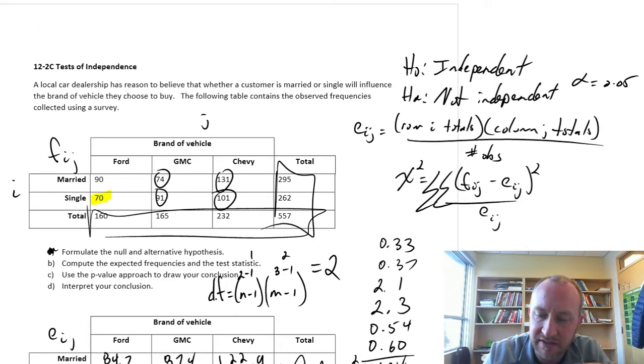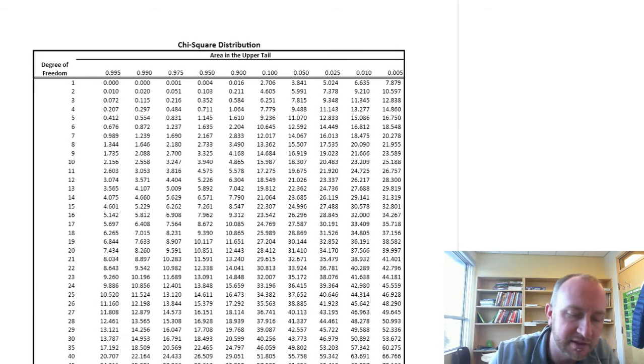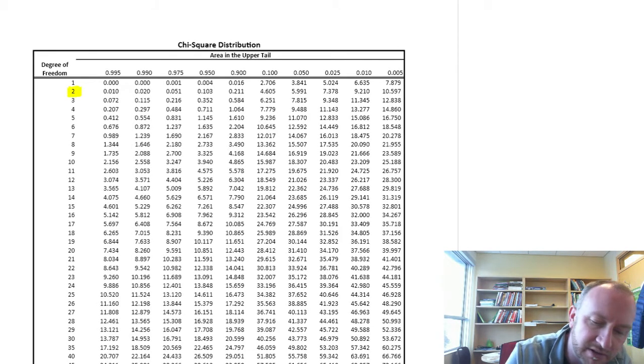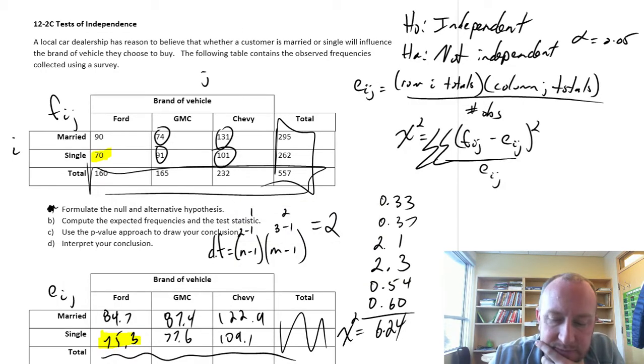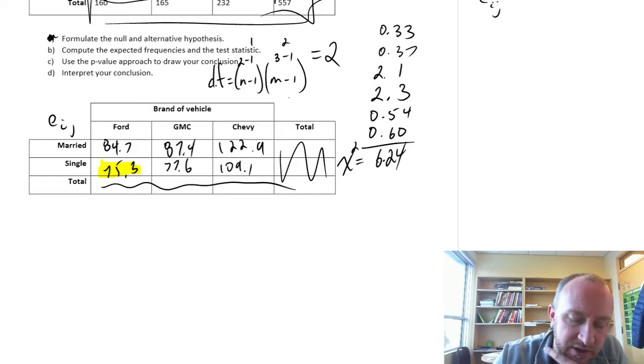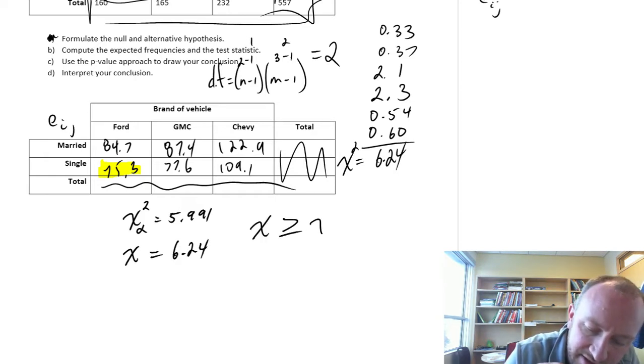Our level of significance, alpha is 0.05. So we're getting familiar with this chi-squared value. 2 degrees of freedom, alpha is 0.05, critical value 5.99. So when we come back here, we have a critical value of 5.991. Our test statistic is 6.24.